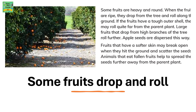Now let's talk about fruits that drop and then roll. Some fruits are heavy and round, so when the fruits are ripe, they drop from the tree and roll along the ground. If the fruits have a tough outer shell, they may roll quite far from the parent plant. Large fruits that drop from high branches roll further. Apple seeds are dispersed this way. Fruits with softer skin may break open when they hit the ground and scatter the seeds. Animals that eat fallen fruits also help spread the seeds further from the parent plant.